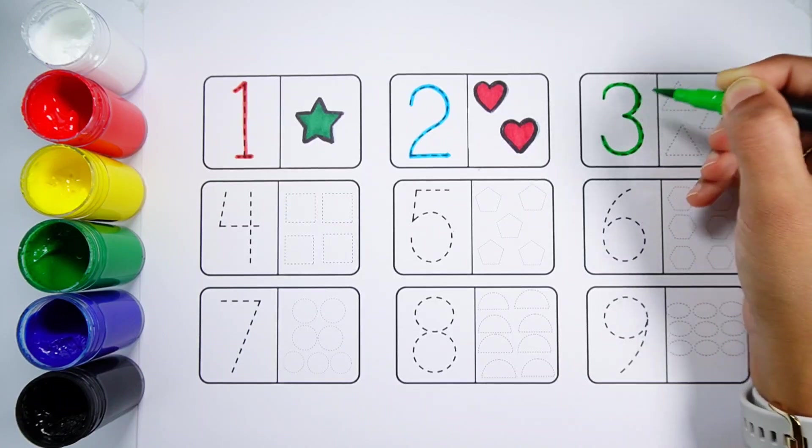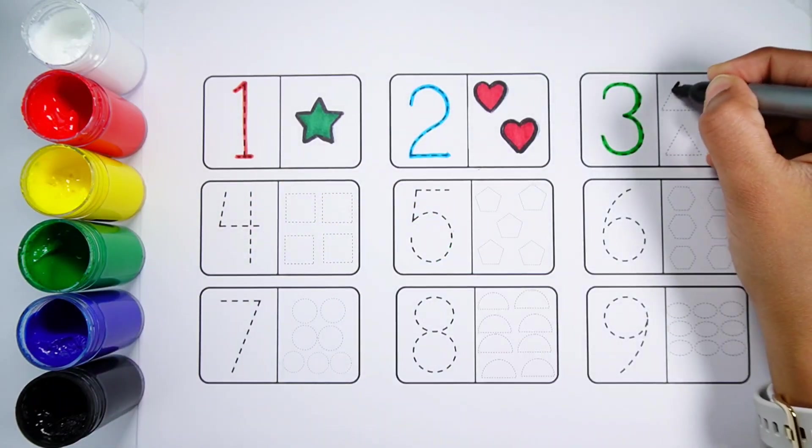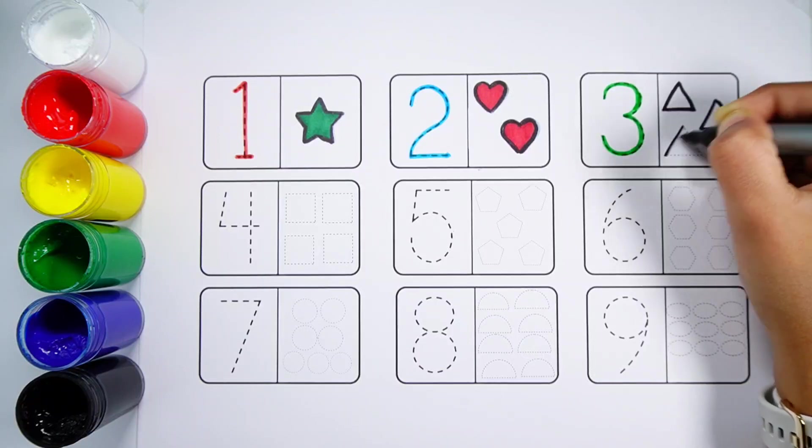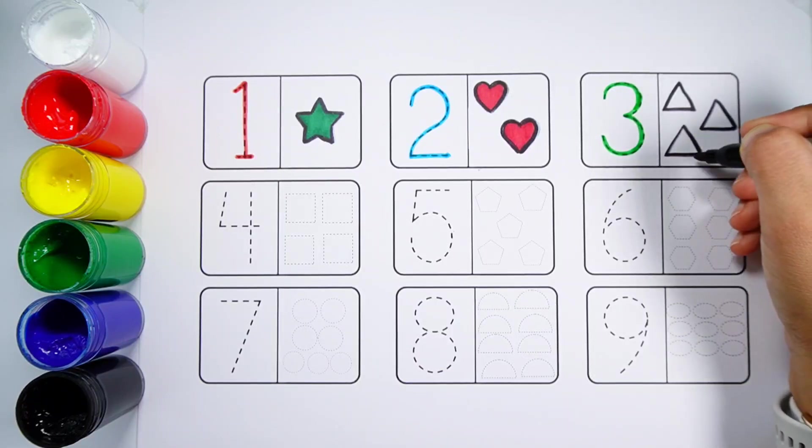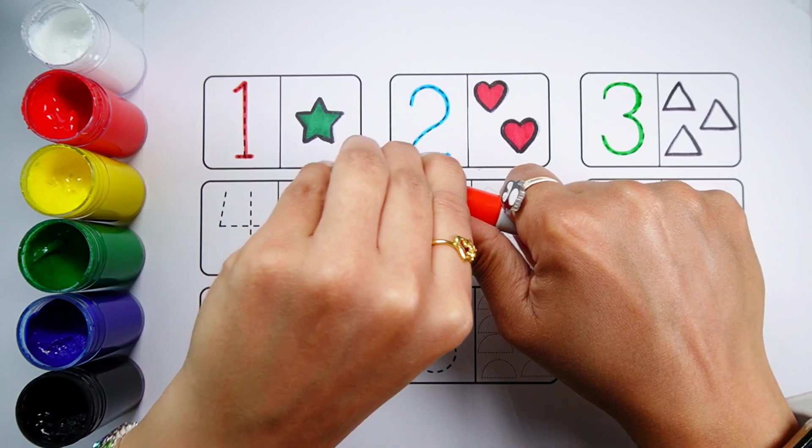Number 3. One Two Three. Three triangles. Orange Color.